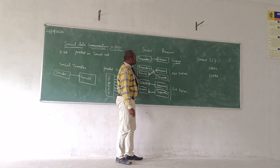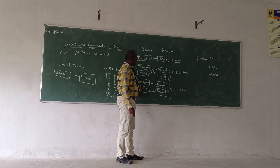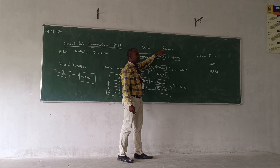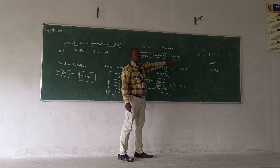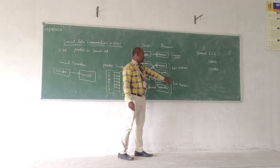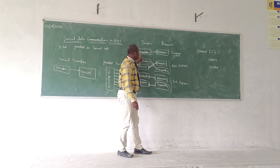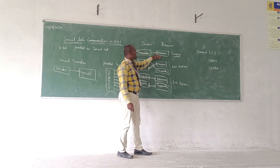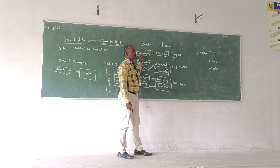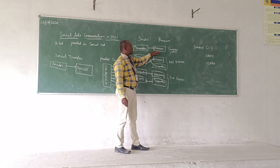Serial data communication is further classified into three modes of operation: simplex mode, half-duplex mode, and full-duplex mode. Consider the sender side and receiver side. In simplex mode, we cannot get any data back from the receiver side — we can only send input to the receiver. For example, a printer.